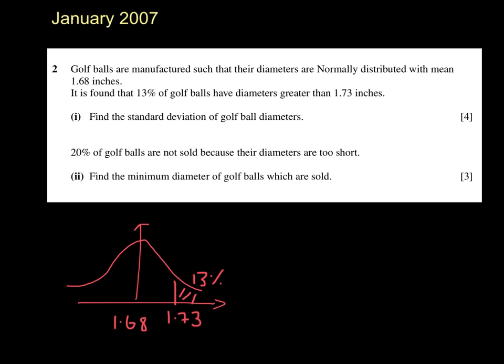The normal distribution tables always work with the larger area. So I'm interested in this area here for the table. I'm going to use the notation Phi of Z. The whole thing must be 100%, so that would be 87%. And as our table works in decimals, I know I'm looking for 0.87.